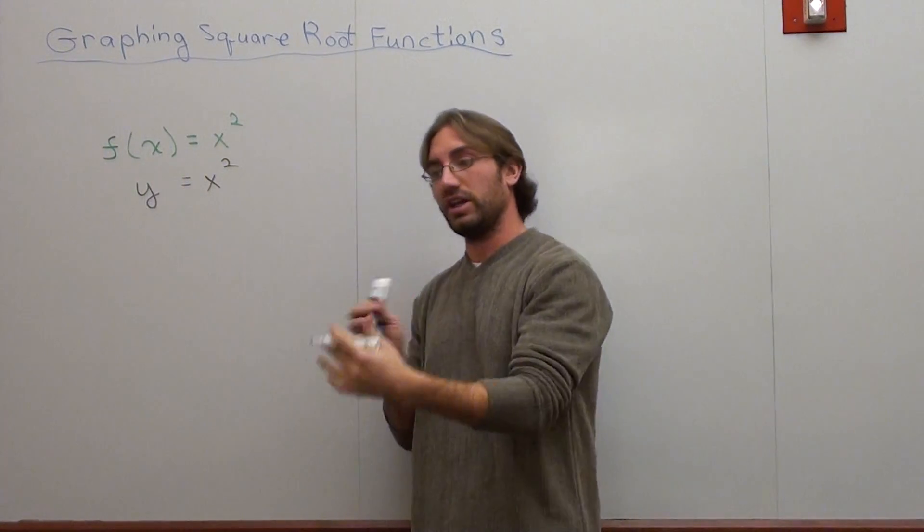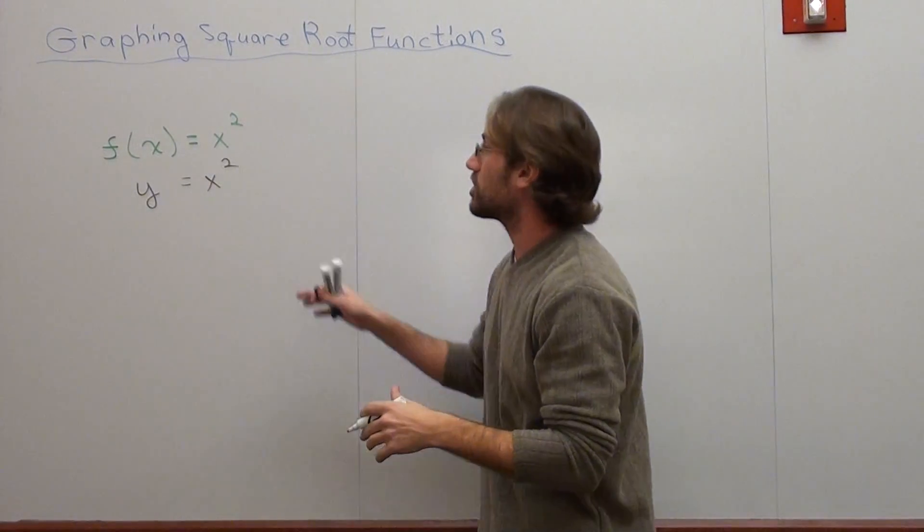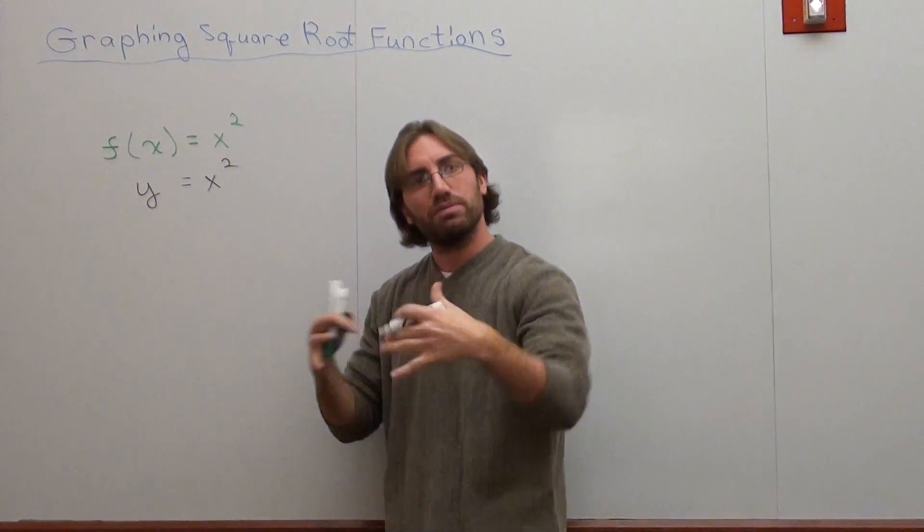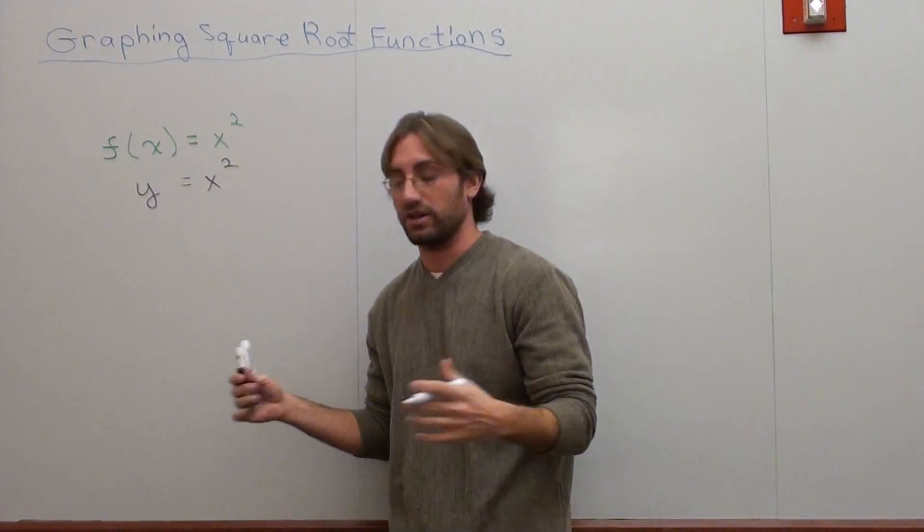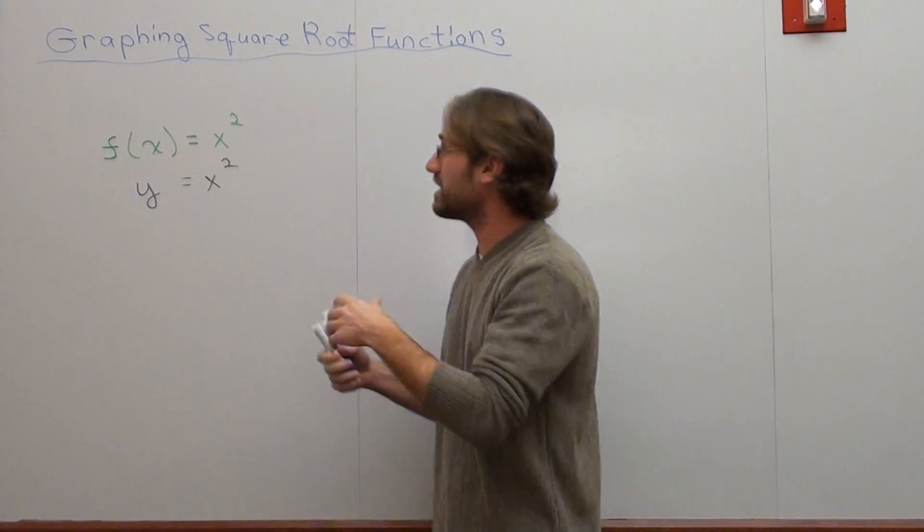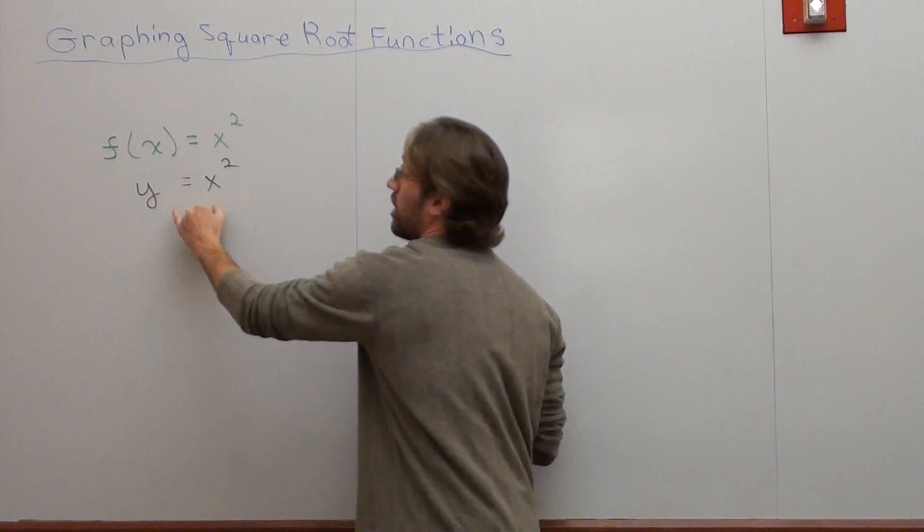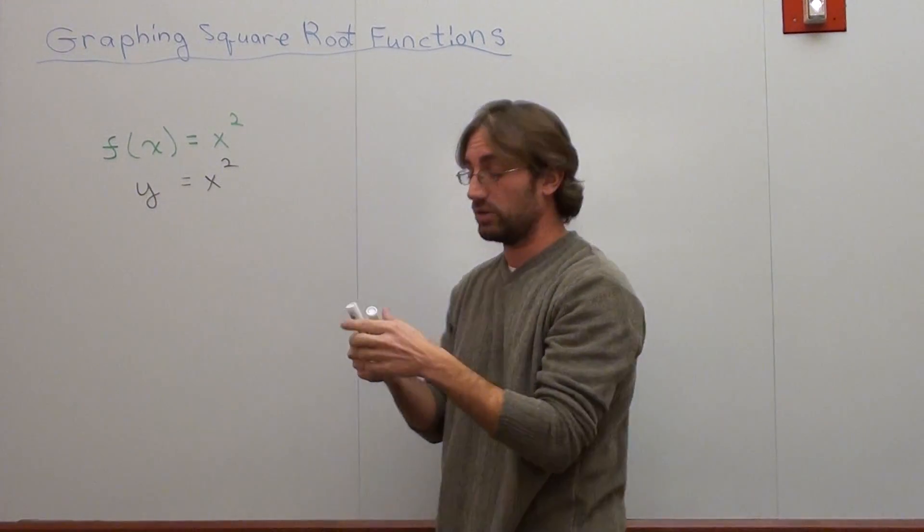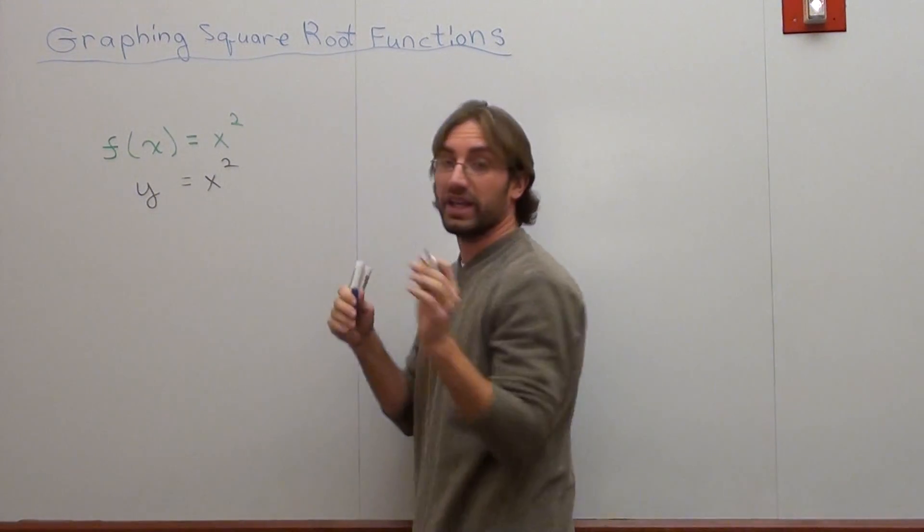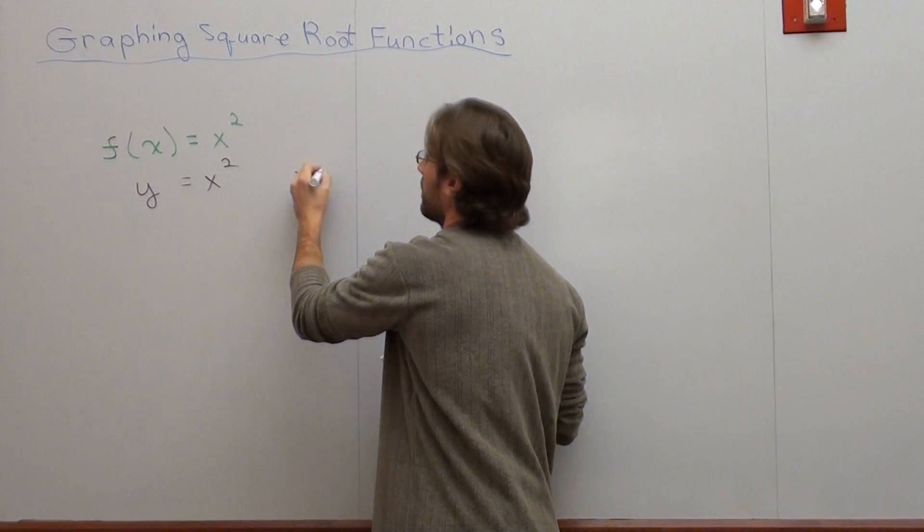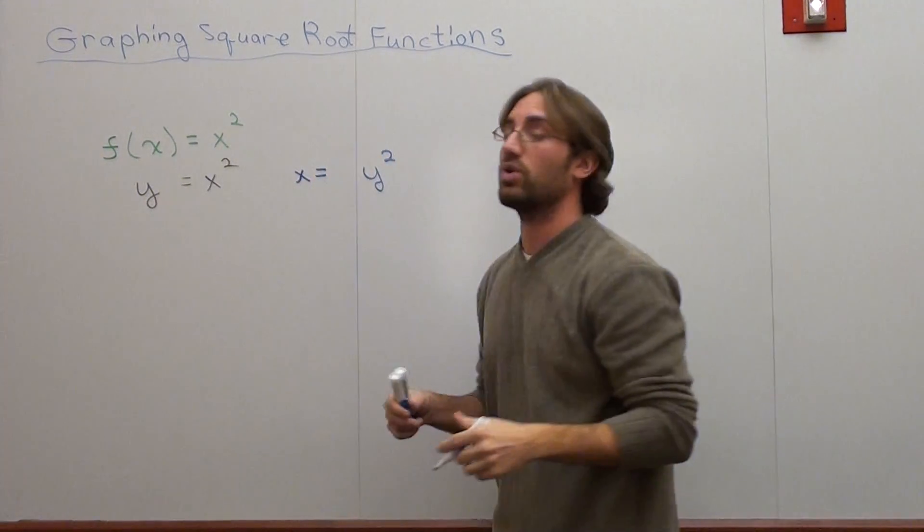Now what we're going to do is we're going to invert the x and the y. There is actually no inverse function for this, but it's a good precursor step to kind of explain the theory of what's going on. So basically what I want to do is I just want to replace the x and the y with each other, or just move spots. So what I get is x equals y squared.